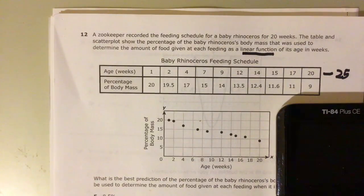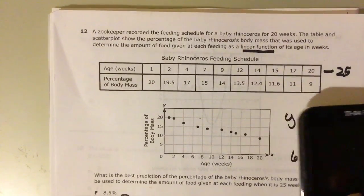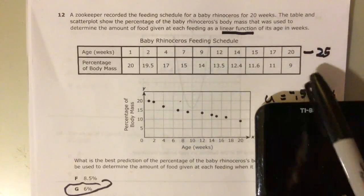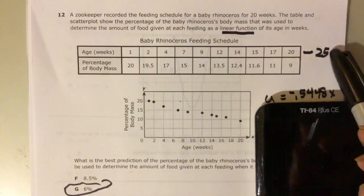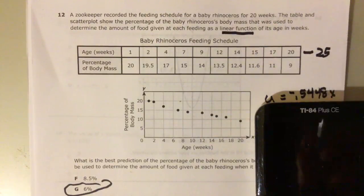So your age is your X and your Y is your percentage of body mass and they gave it to you. So they want to know what's going to happen at age 25 weeks. What would the percentage be? If X is 25 then what is your Y.